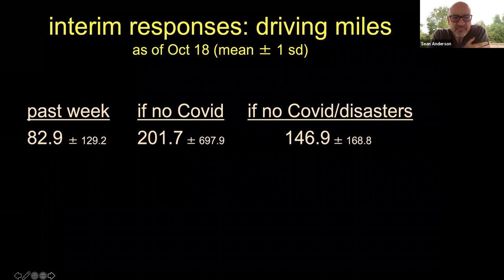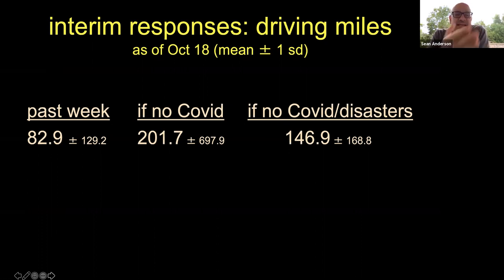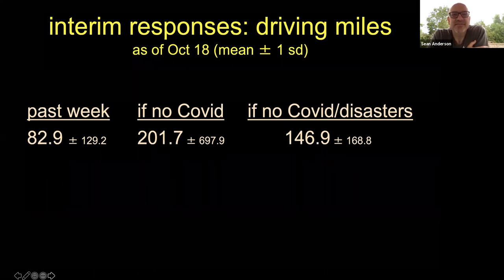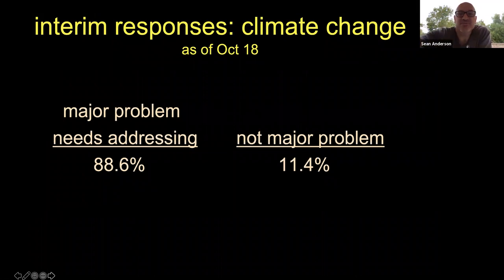First finding, probably not surprising: people have clearly been driving differently than they otherwise would have. In the past week people reported driving about 83 miles, whereas without COVID they would be driving closer to about 200 miles, and if there were no COVID or natural disasters maybe around 150 miles a week. If you want to ask questions or make comments, just unmute and chime in.